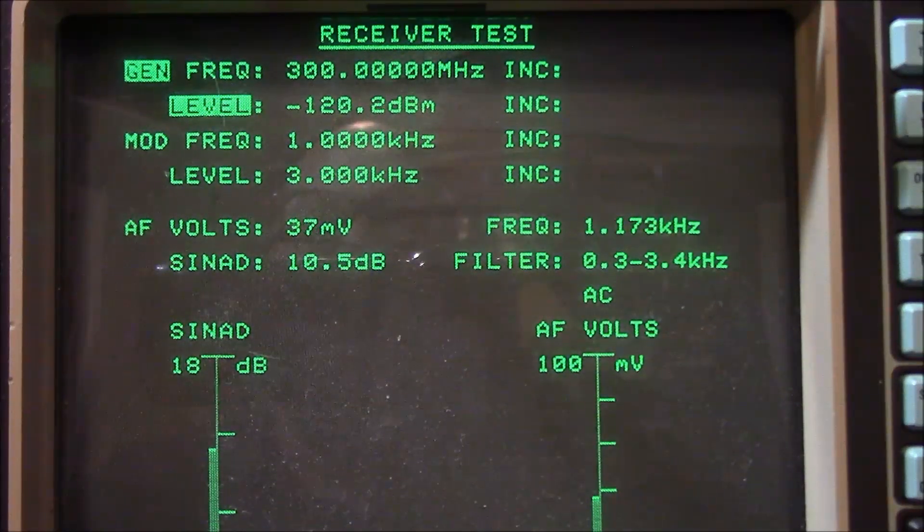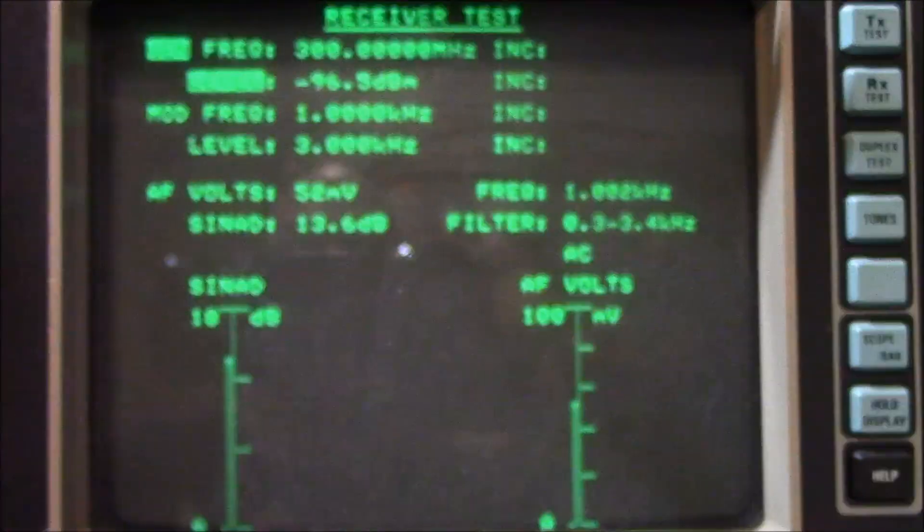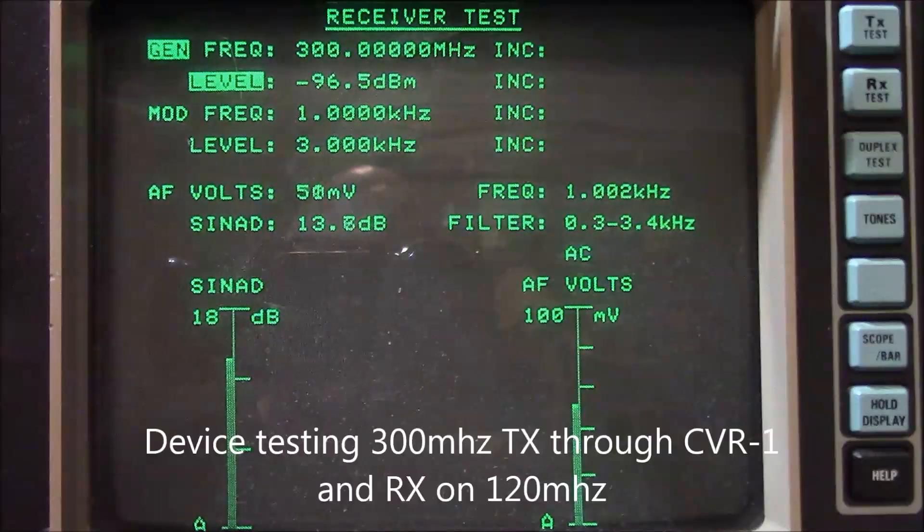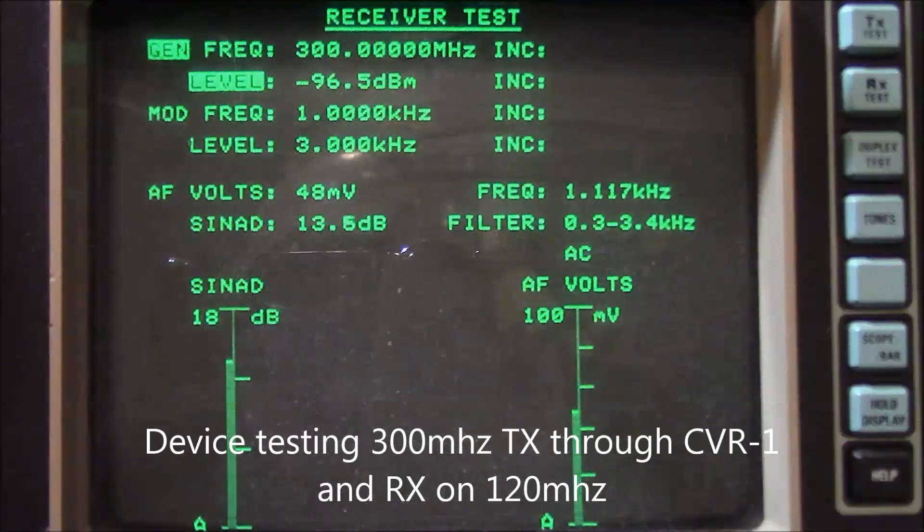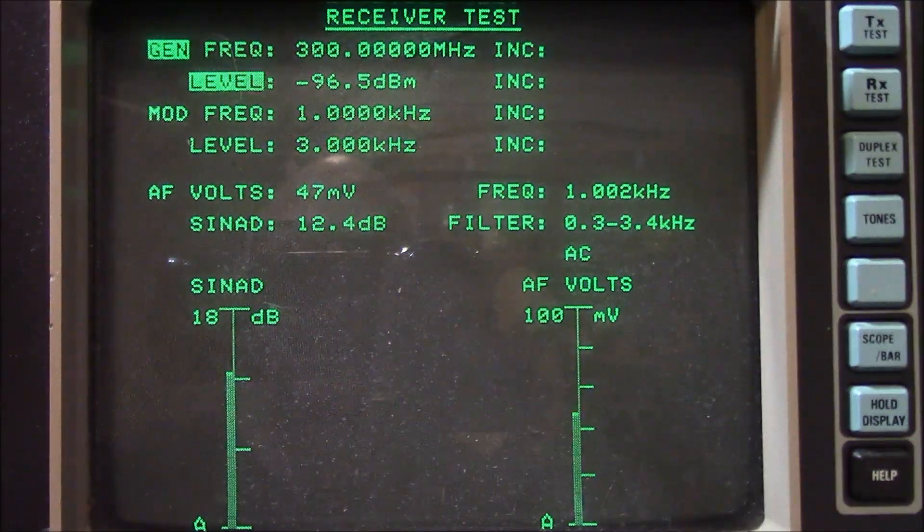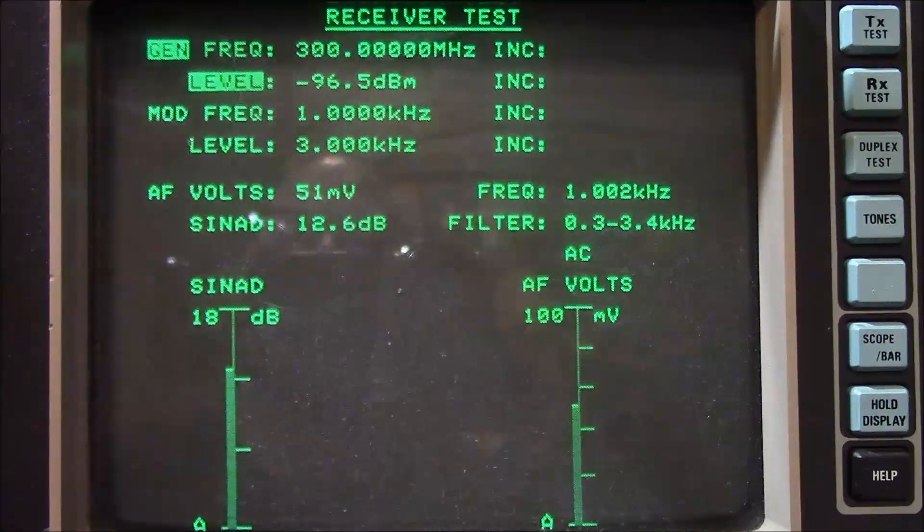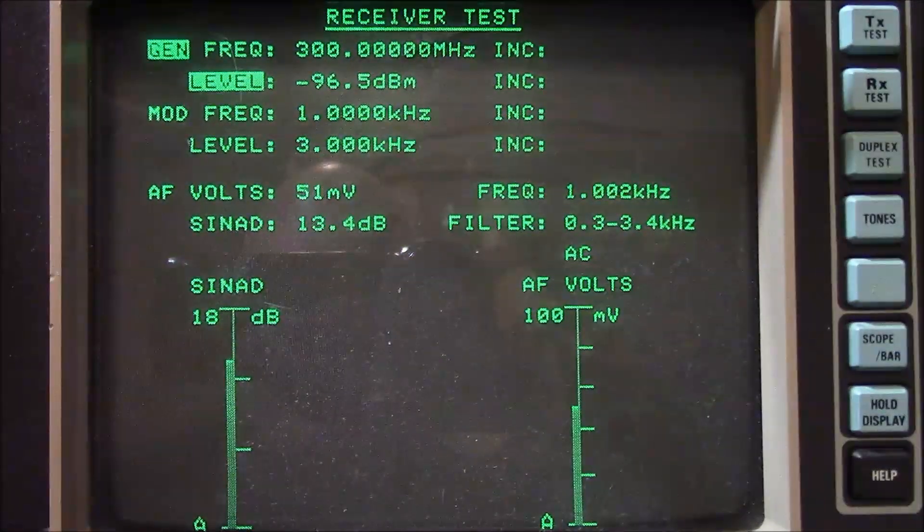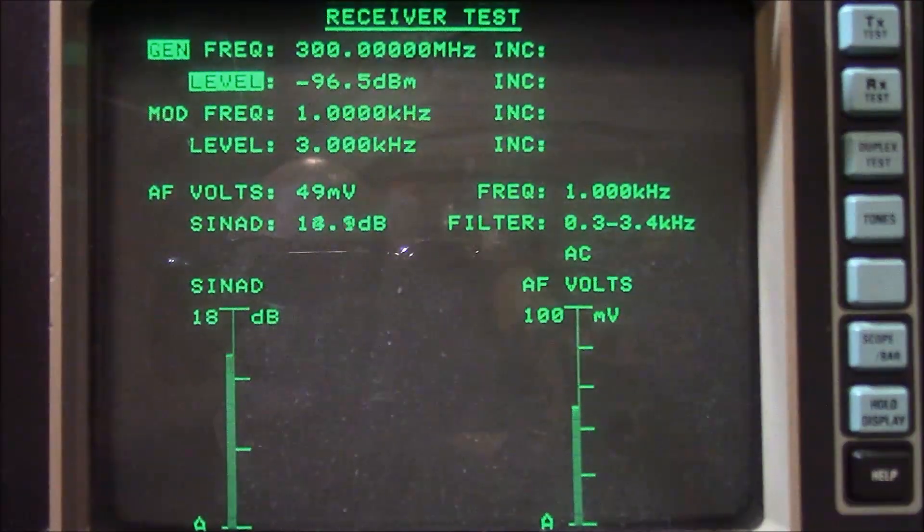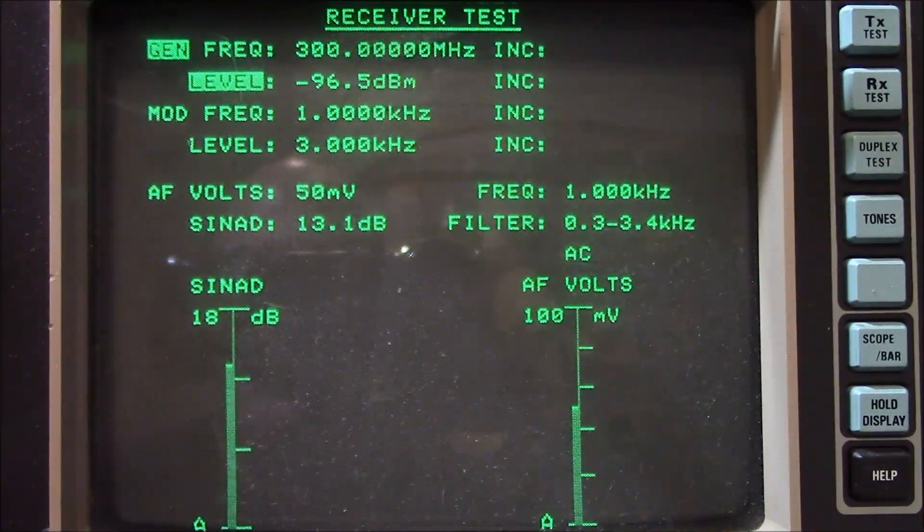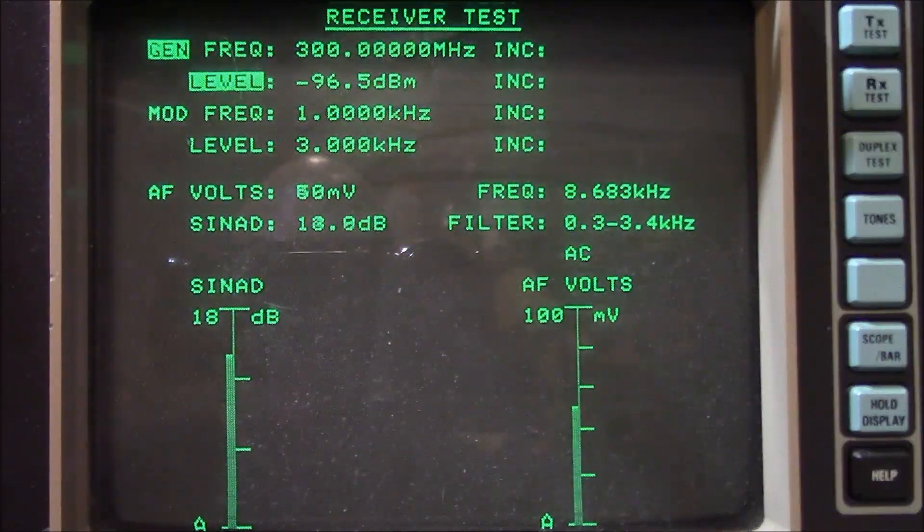We can see that right now, the reference amount of power being fed into this to give us 12 dB of SYNAD is about 120 decibel milliwatts. And now we're running our signal at the same frequency through our converter and we're taking the receiver and we're having the receiver tuned to a frequency of 120 MHz, which is working as intended. So, it does work. But you can see how much larger of a signal is required to give you the same audio quality.